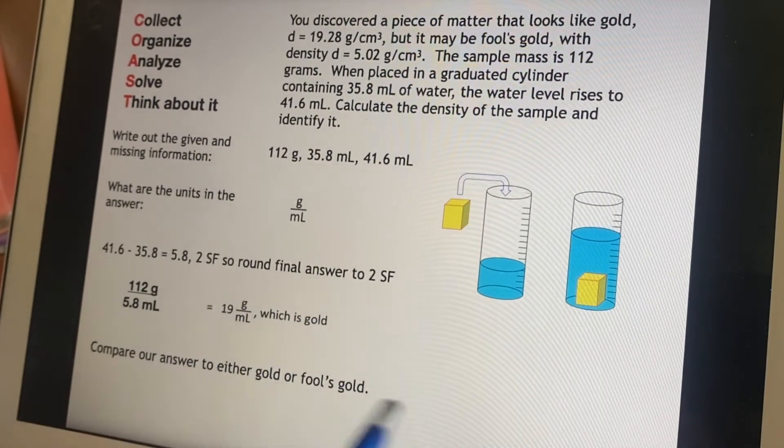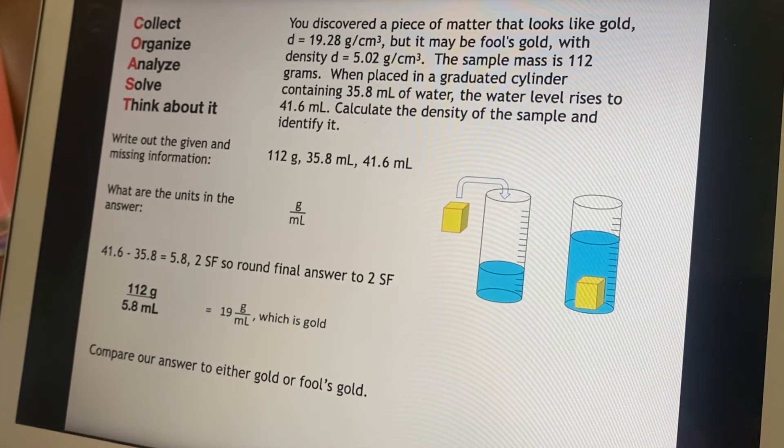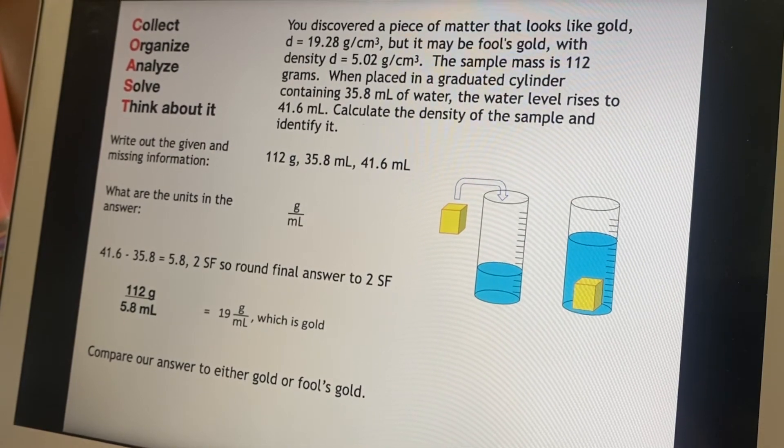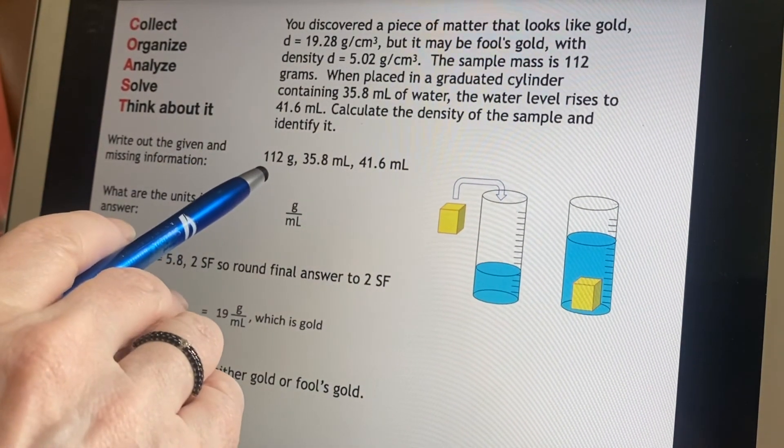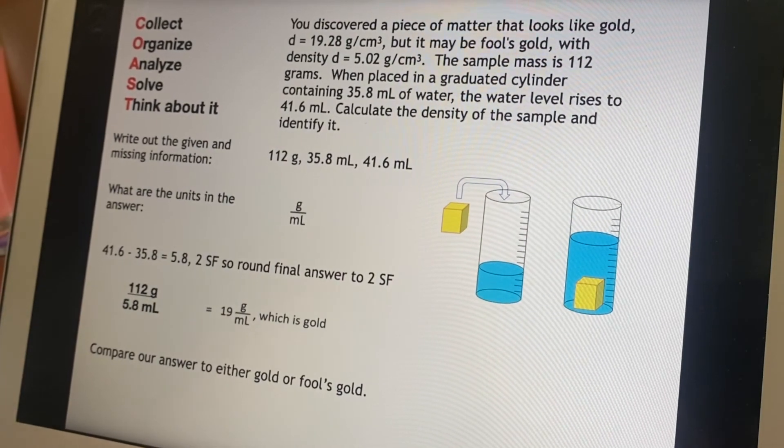I've established that this item I found is actually gold. And I'm feeling very pleased with myself. Yes, I should, because that is about three ounces of gold. Oh, that's a lot of money. Yep. I'm happy.